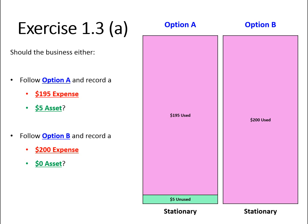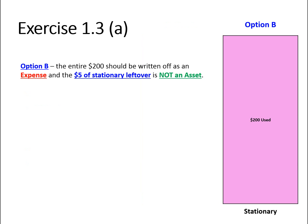To answer that question, I'm going to rely on a qualitative characteristic to back up my opinion. I'm going to go with Option B and state that the entire $200 should be written off as an expense.